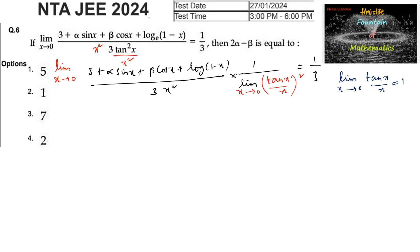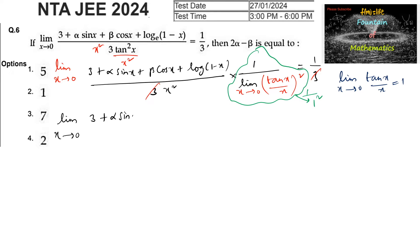So we may cancel the 3s on both sides, and since limit x tends to 0 of (tan(x)/x)² equals 1, we can write: limit x tends to 0 of [3 + α·sin(x) + β·cos(x) + log(1 - x)] / x² is equal to 1.